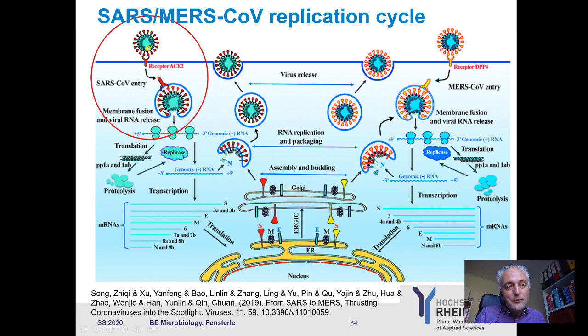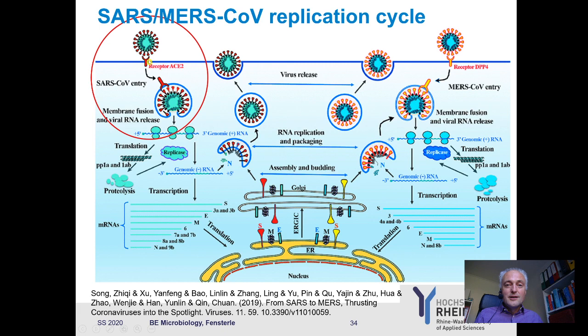A very obvious approach is blocking the attachment of the virus to ACE2 — if you block this, the complete replication cycle is gone. If you have an antibody recognizing the surface protein, you block replication. This is what some are doing now: extracting antibodies from recovered patients and re-administering them to block this step. This is also the intention of a vaccine — producing antibodies that block attachment.